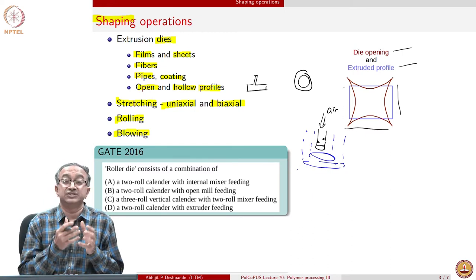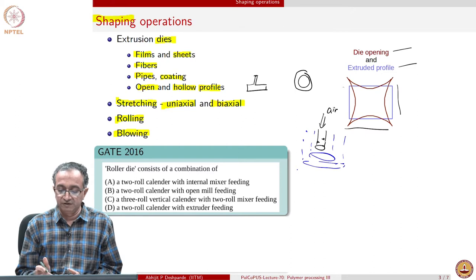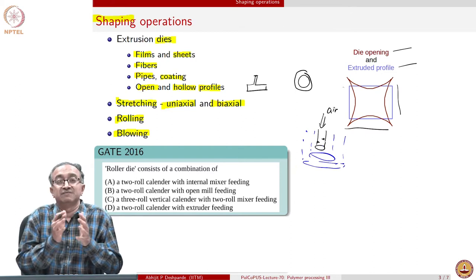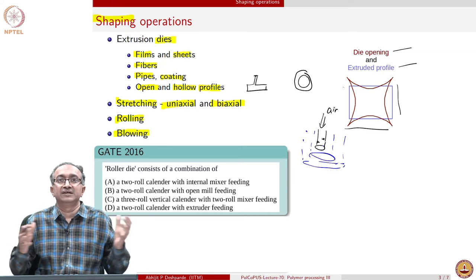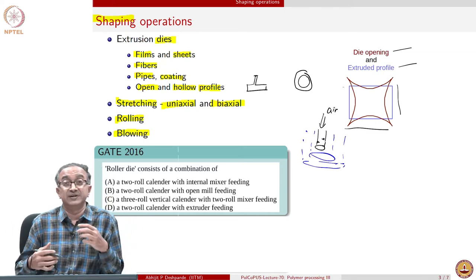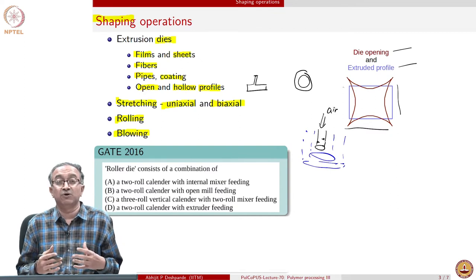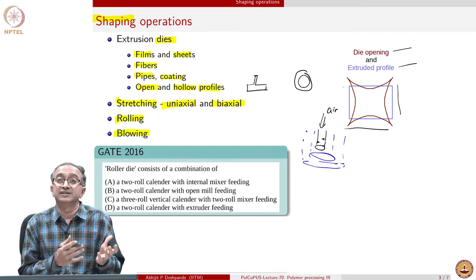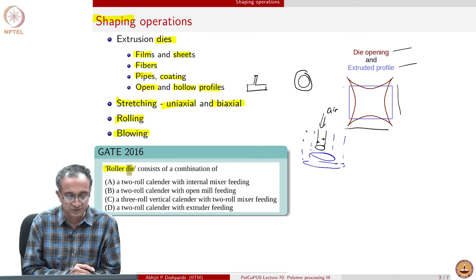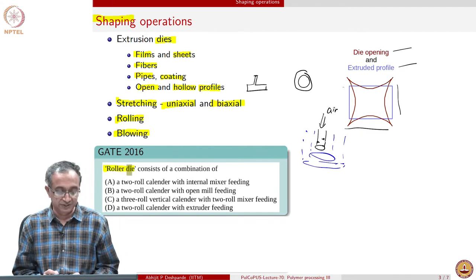That will lead to stretching and shaping operations. The thickness will depend on how much it is blown because it is the same amount of material which is being now blown to a very large extent. Just to highlight various set of shaping operations and how different industries use different nomenclature, roller die is a term which is used generally in rubber processing.